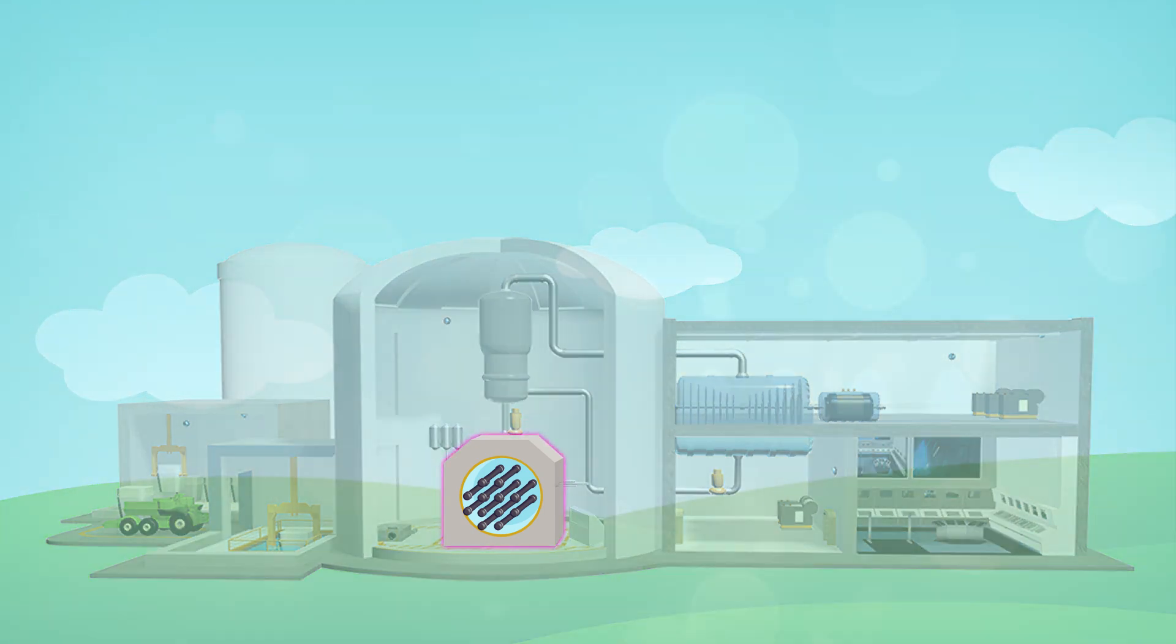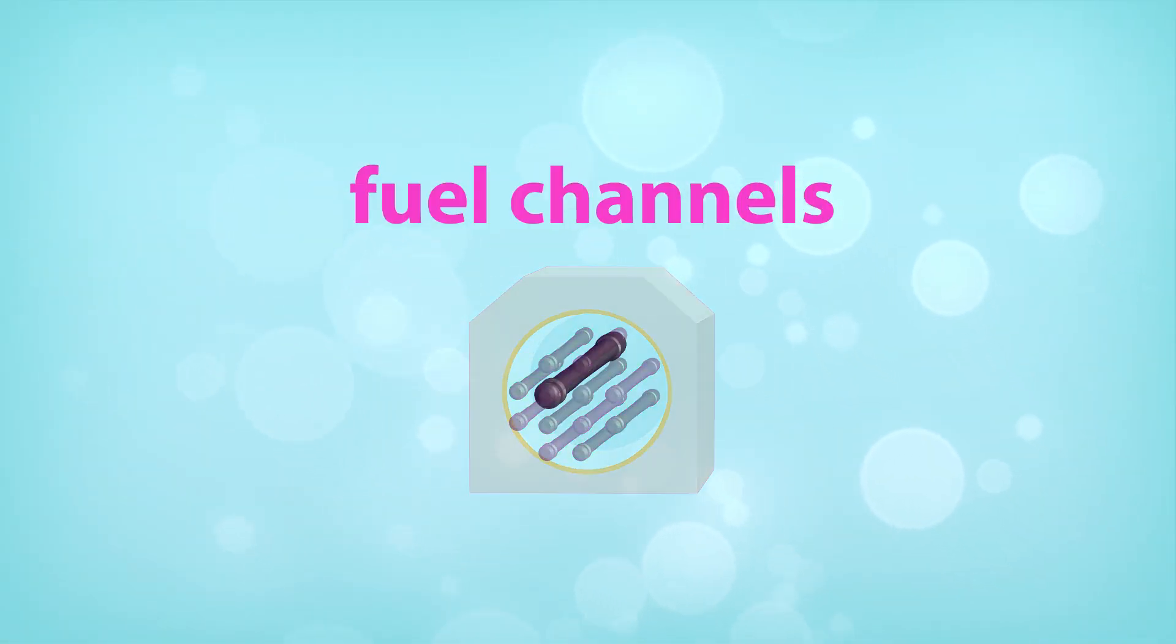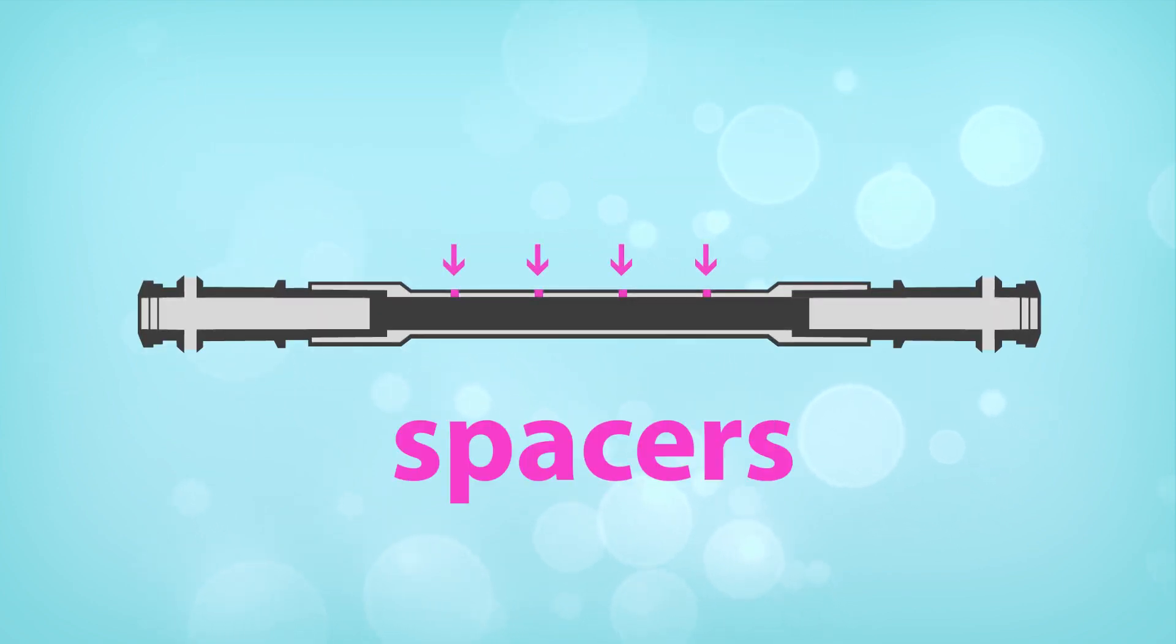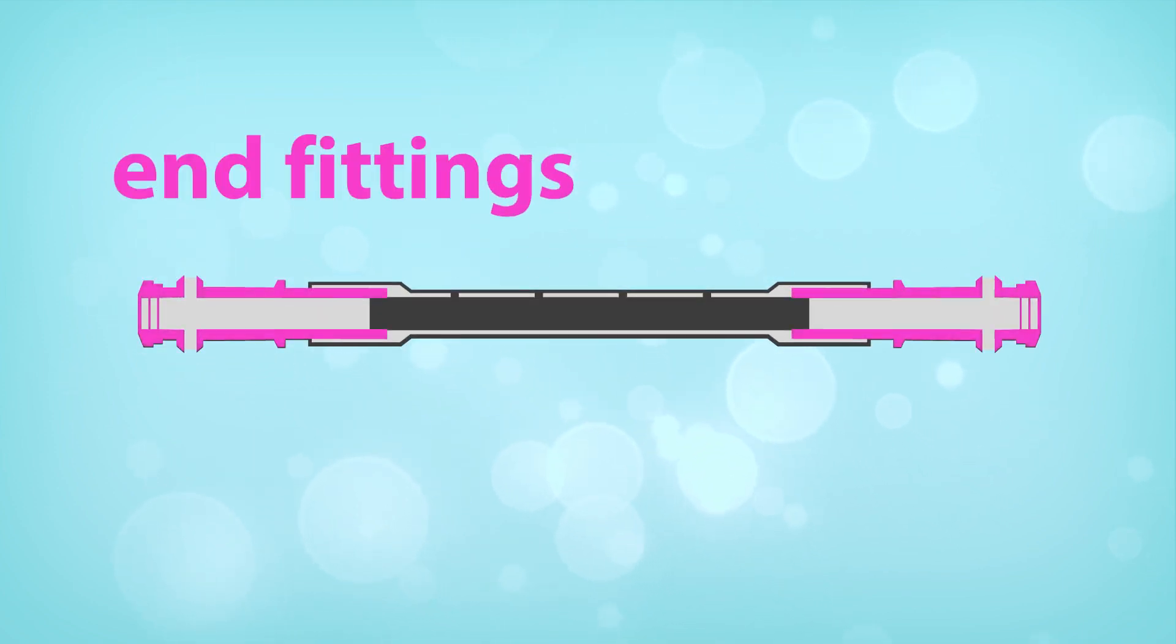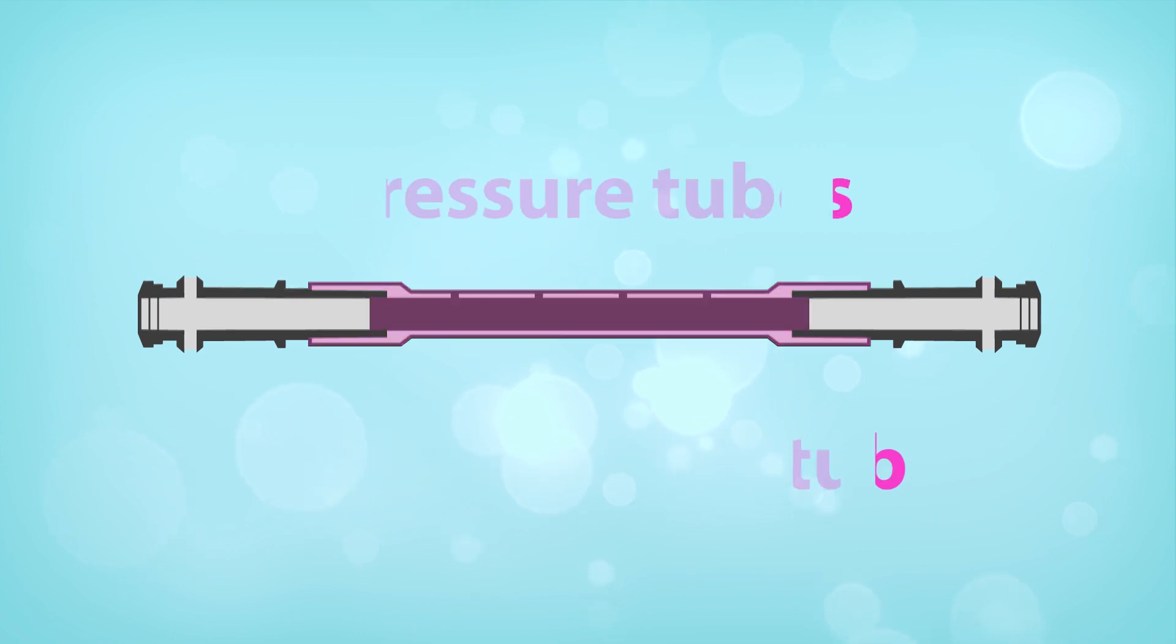Inside all CANDU nuclear power reactors in Canada are several hundred fuel channels. Each one has four spacers, end fittings, a calandria tube, and pressure tubes.